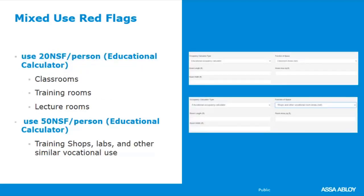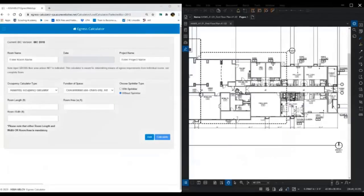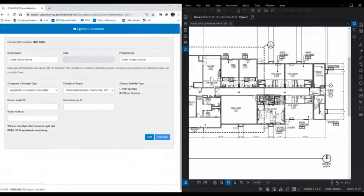Use the educational calculator at 20 net square feet per person for classrooms, training rooms, and lecture rooms in other types of occupancies such as a business occupancy or a hospital. The educational calculator for training shops, labs, and other similar vocational use may also apply within another occupancy type.